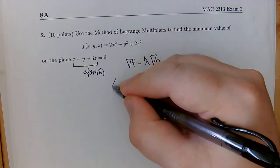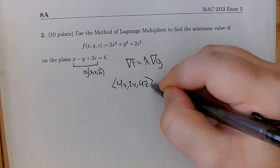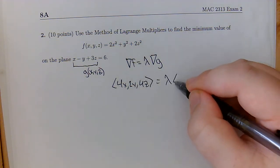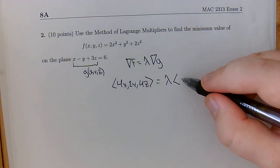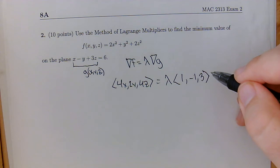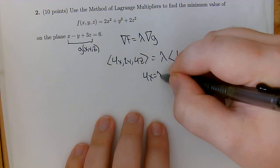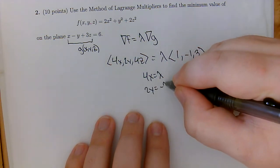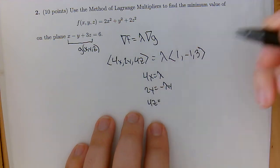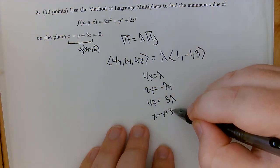So the gradient of f will be (4x, 2y, 4z). And that needs to equal lambda times the gradient of g, which is going to be (1, -1, 3). So that ends up giving us a few equations here. We have 4x is lambda. We have 2y is negative lambda. We have 4z is going to be 3 lambda. And we also have the constraint equation: x minus y plus 3z is 6.